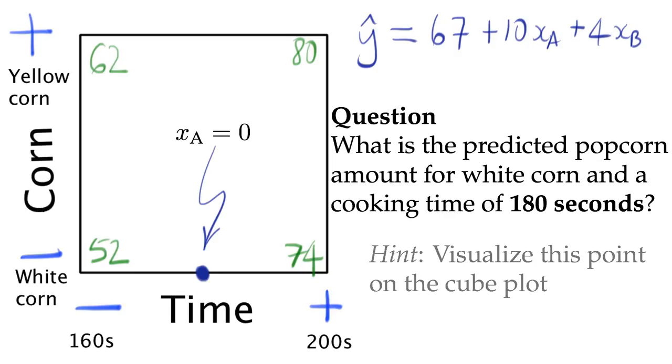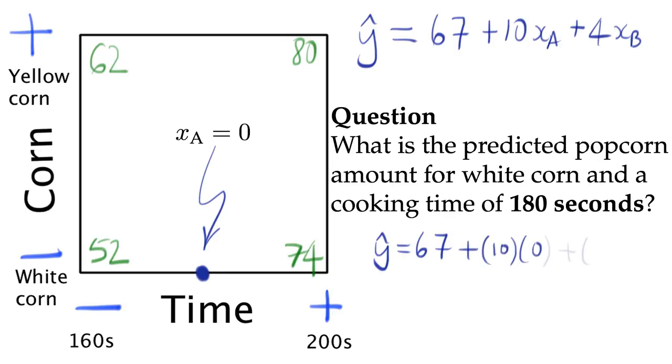The prediction is made here with xa equal to 0. That's our coding for 180 seconds. We showed in the previous part that 180 seconds is midway between 160 and 200, and so the coded value for xa is also halfway between minus 1 and plus 1, in other words 0. The coded value for xb is minus 1 for white corn. And so if we use all of that together now, we get 67 plus 0 minus 4, and that gets us a prediction of 63 popped corns.